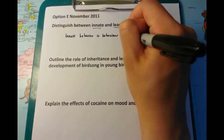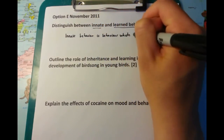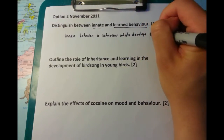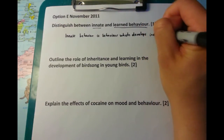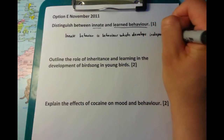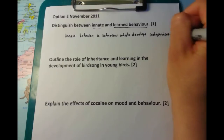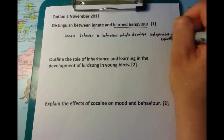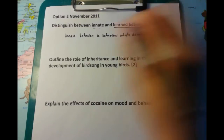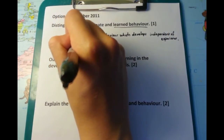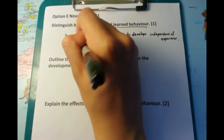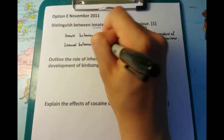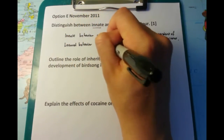Innate behaviour is behaviour which develops independent of experience, whereas learned behaviour is the opposite. It depends on environmental context, or you can say it is dependent on experiences that the individual has.